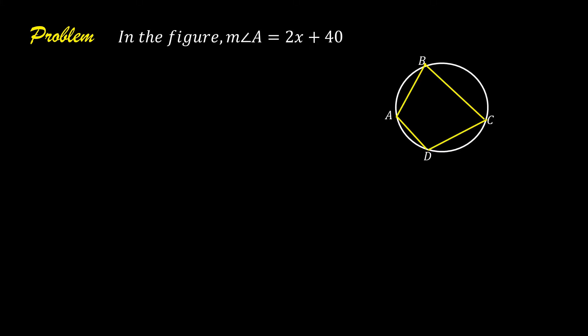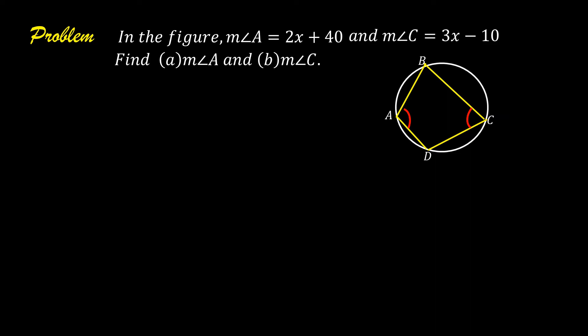In the figure, the measure of angle A is equal to 2x plus 40, and the measure of angle C is equal to 3x minus 10. Find letter A, the measure of angle A, and letter B, the measure of angle C.